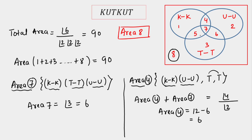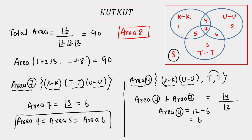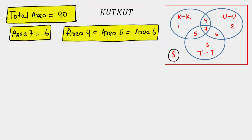By symmetry, area 4 = area 5 = area 6. The calculation for each pairwise intersection is exactly the same, so all three equal 6.